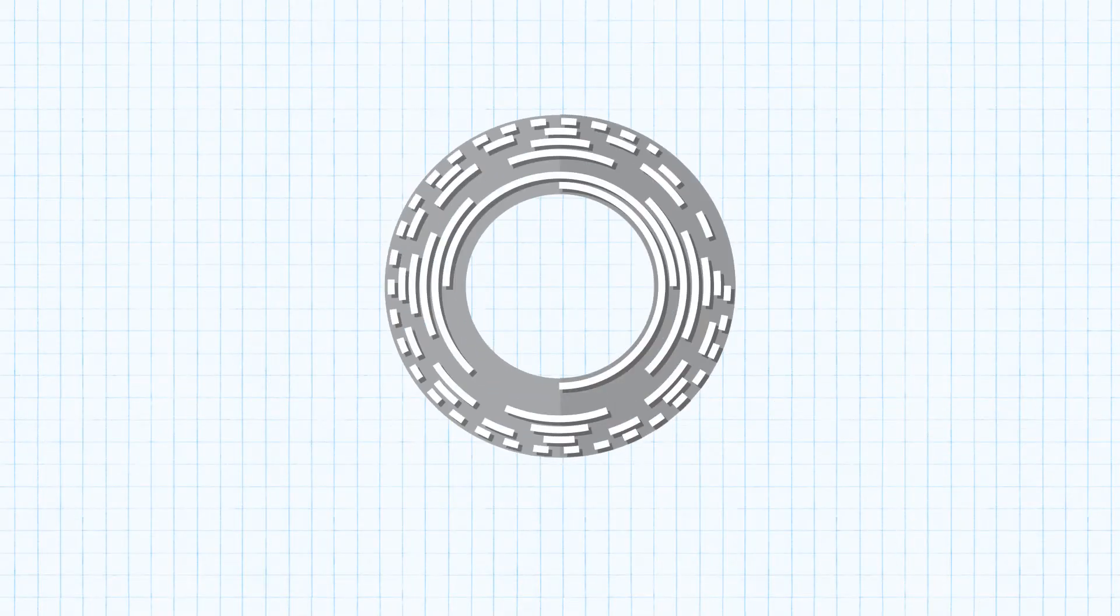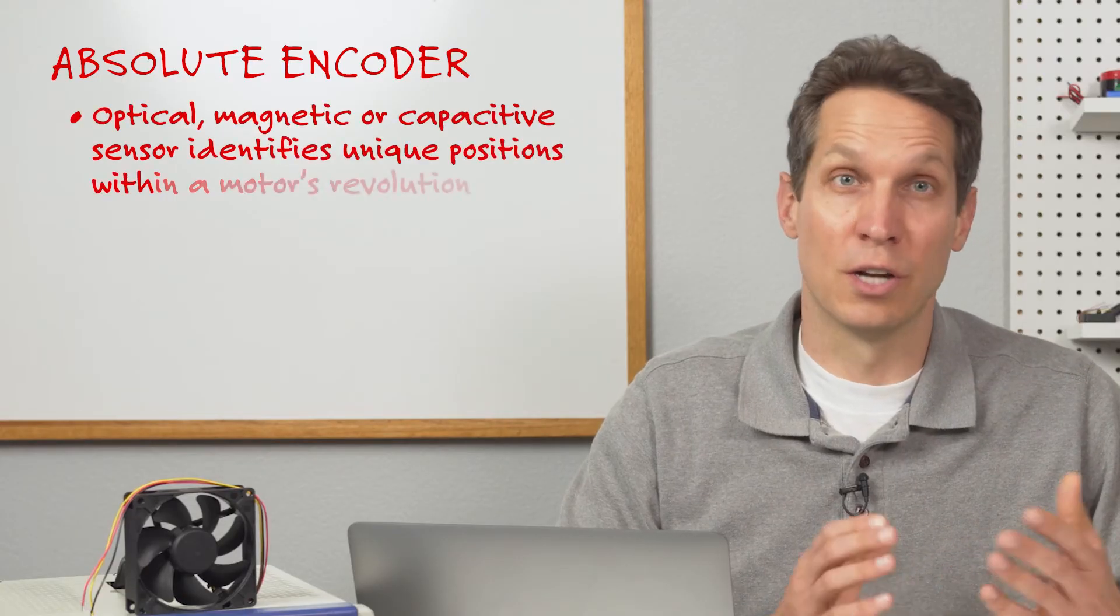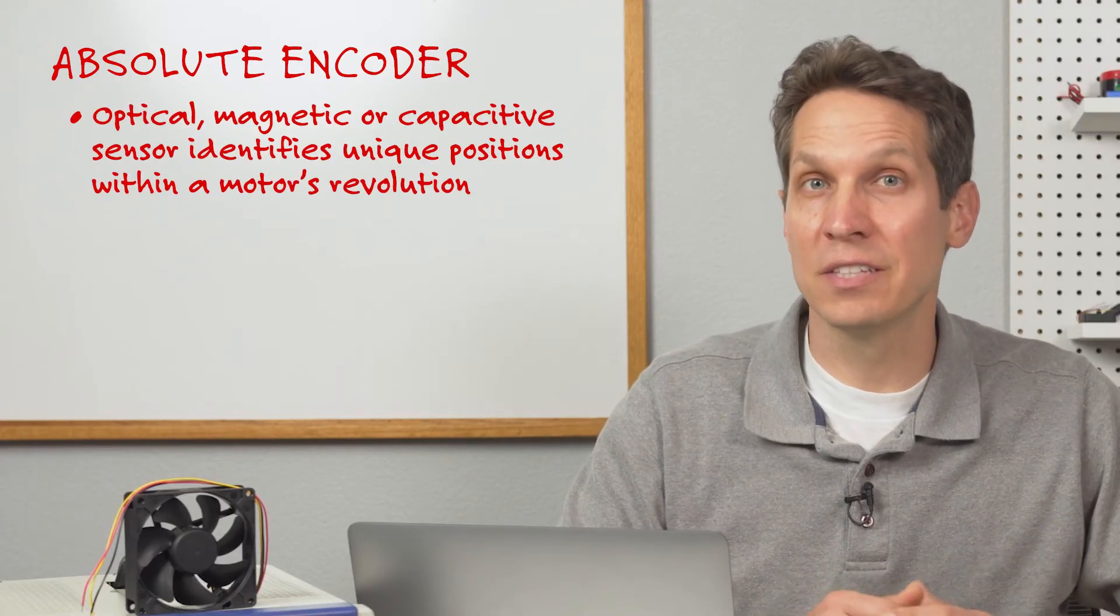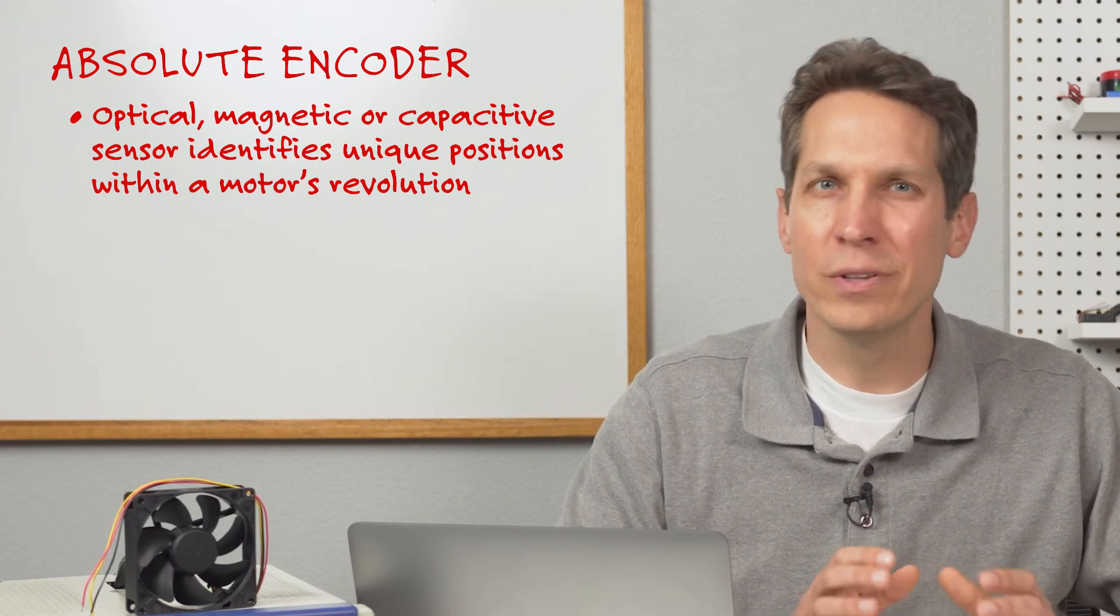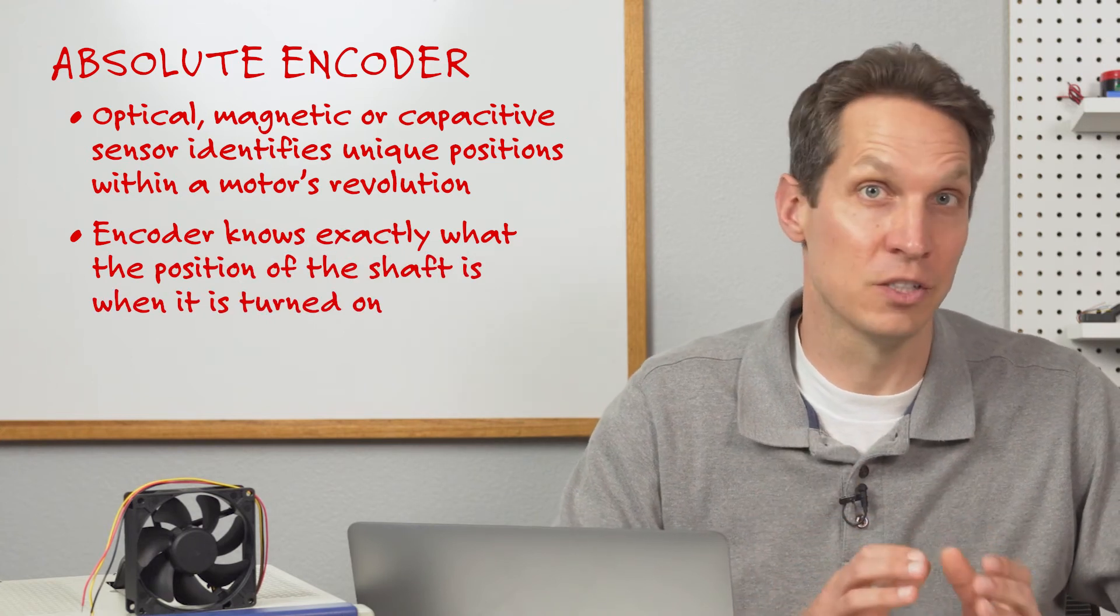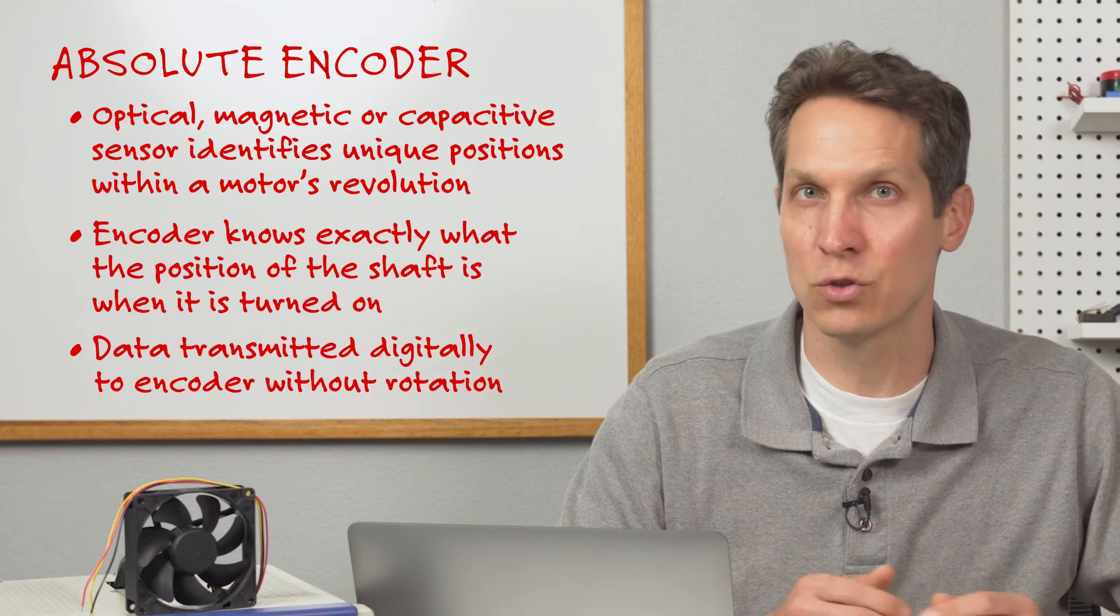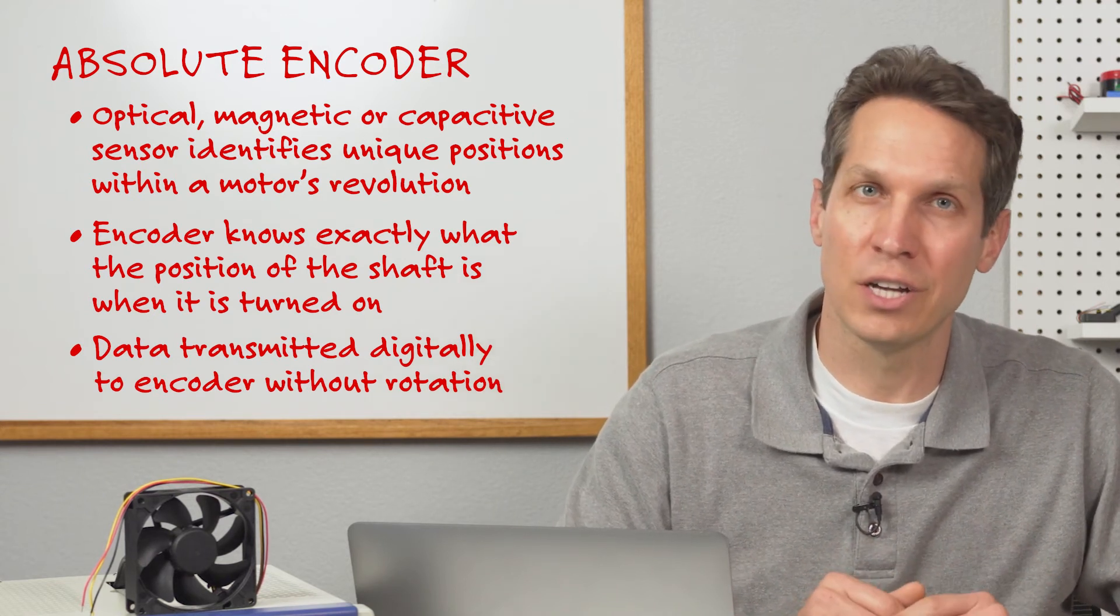However, all of these drawbacks are overcome with an absolute encoder. An absolute encoder uses an optical, magnetic, or capacitive sensor to identify unique positions within a motor's revolution. With these sensors, as soon as you switch on the encoder, it knows exactly what the position of the shaft is and will transmit that data digitally to your controller, usually over a serial interface, without needing to rotate the shaft.